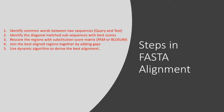Going into the stepwise workflow of FASTA alignment in more detail: the first step is to identify common words between the two sequences. A word is a set of nucleotides or amino acids found between the query sequence and the test sequence we are comparing with. We try to find identical words between the two sequences and then identify the diagonally matched sub-sequences with the best scores.